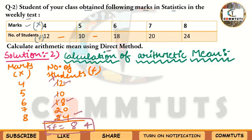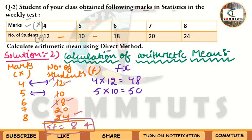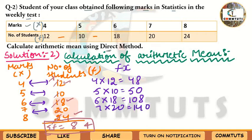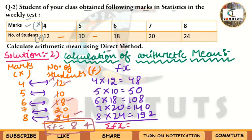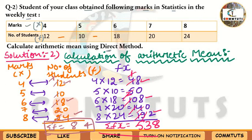Next calculate FX by multiplying marks (X) by number of students (F): 4×12=48, 5×10=50, 6×18=108, 7×20=140, 8×24=192. Now add all FX values: 48+50+108+140+192 = 538. So ΣFX = 538.